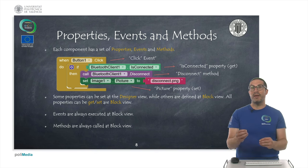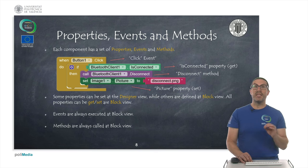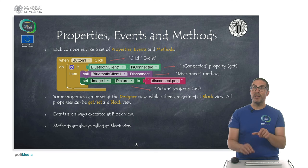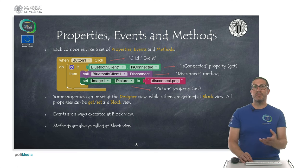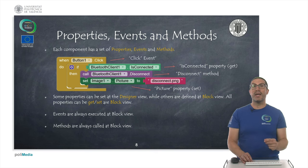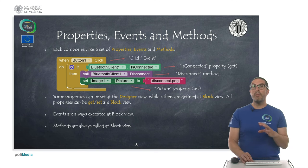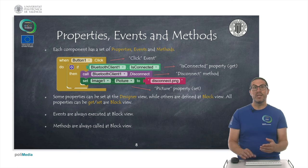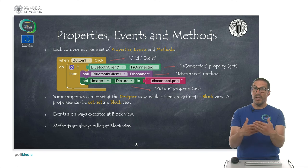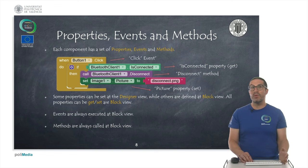Properties define how the component behaves. They can be set at design time, but also in the block view by coding and setting specific values for each property of the components, or we can get a specific value of a component. Events are pieces of code that are executed on demand because an external signal occurs that triggers that event — like a click of a button — and they are executed in the block view. Some components also have methods, which are functions that do something, like in this example a Bluetooth client disconnect. Some methods return a value, others don't.